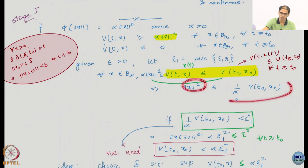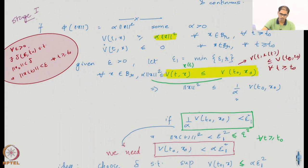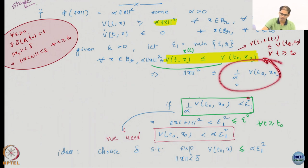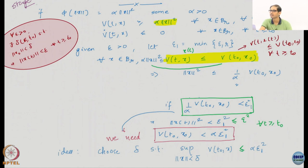From α‖x‖² ≤ V(t₀, x₀) I can get a bound on ‖x‖². Stability requires bounding ‖x‖, so I have already reached a stage with a bound on ‖x‖². If V(t₀, x₀) < α·ε₁², then ‖x‖² < ε₁² and therefore ‖x‖ < ε₁ ≤ ε — done. So I need to choose δ such that sup_{‖x₀‖ < δ} V(t₀, x₀) ≤ α·ε₁². I can choose such a δ, and stability is proved.